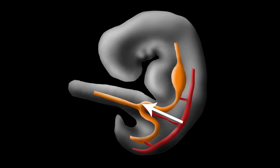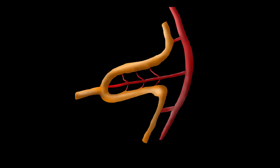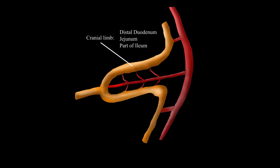During the fifth week of development, the mid-gut starts to loop ventrally, herniating into the umbilical cord. This growth process creates much of the resulting length of the intestines. The cranial limb of this mid-gut extension will ultimately form the distal duodenum, jejunum, and part of the ileum.